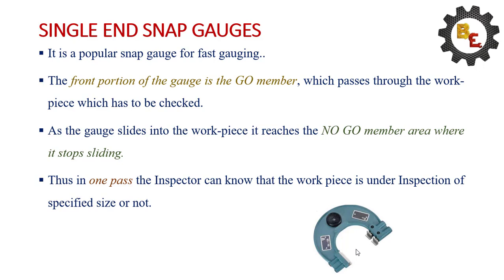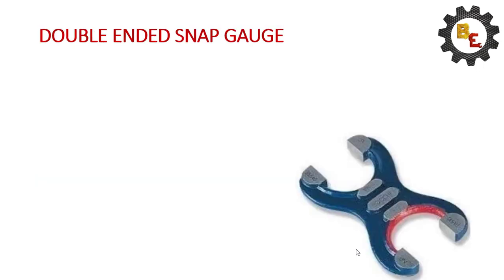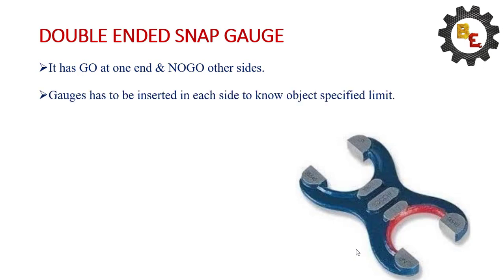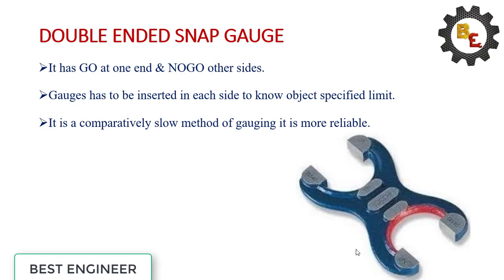Thus, in one pass, the inspector can know if the workpiece is under the inspection of special size or not. Double-ended snap gauges: it has go at one end, no-go in other end. Gauges to be inserted in each side of the object within special limit. It is comparatively slow method gauging and it is more reliable.